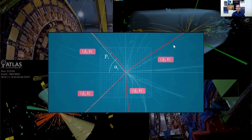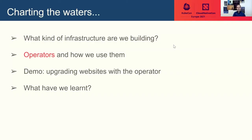Because this is a big organization housing 12,000 and more physicists, we want to take care of every aspect of their work, and that includes public outreach. So let's see what we are going to talk about today. First of all, we want to explain what kind of infrastructure we are building, related to public outreach, how we use operators and what exactly they are. Then we want to show upgrading some websites with our operators, and finally we'll see what we have learned.